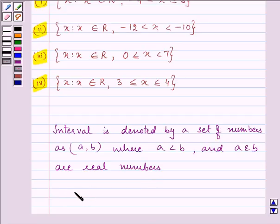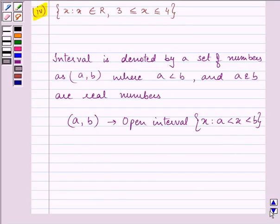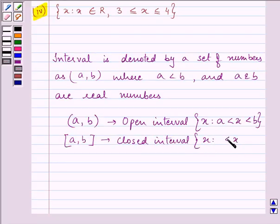Now if we are writing A comma B in brackets like this it is called open interval which is usually written as X is greater than A and less than B. Whereas when we write it in square brackets it is called closed interval where X is greater than equal to A and less than equal to B.